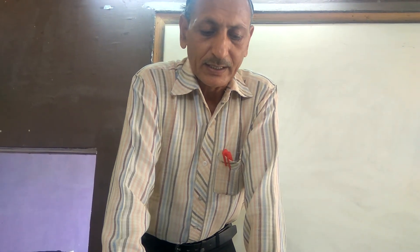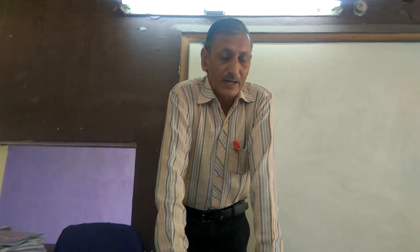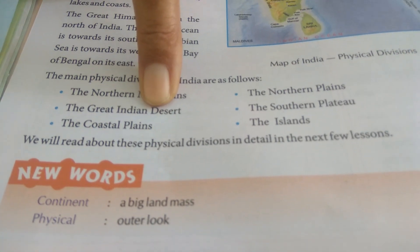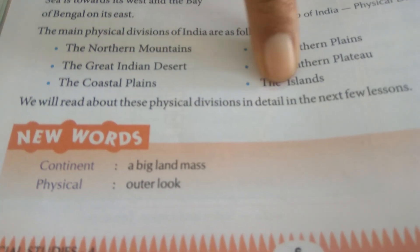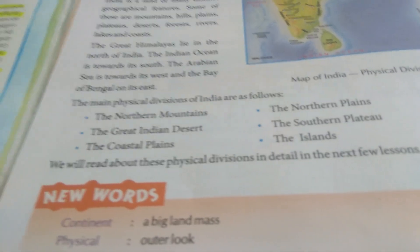Today you should revise how the different features of India were formed. You must remember the six different features of India: the northern mountains, northern plains, the great Indian desert, the southern plateau, the coastal plains, and the islands. You must show them in the physical map as well.